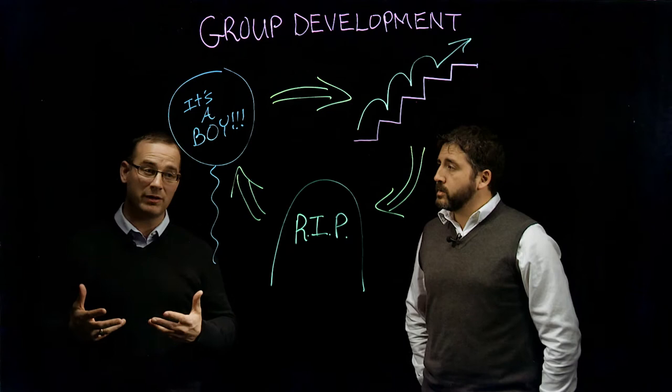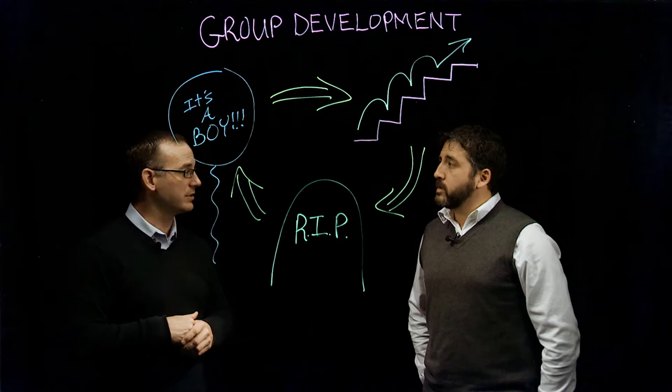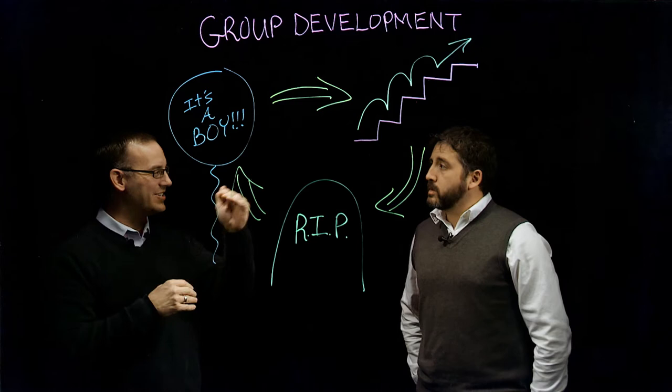If you missed that video, maybe go back and take a look at that model. That was Tuckman's model, a five-stage group development process. In this model, instead of it being linear where teams automatically progress from one stage to the next...